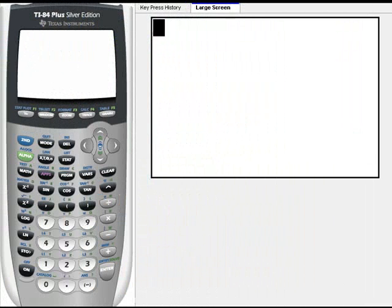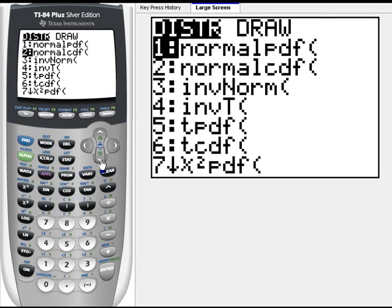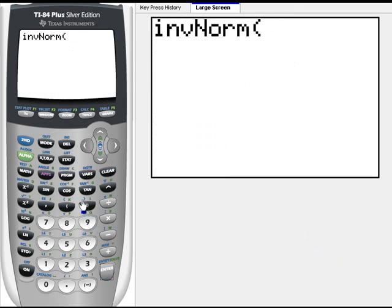So we need to find the Z value that corresponds with an area to its left of 0.05, and the command on the TI-84 that allows us to calculate that would be found under second vars inverse norm. And the commands are the area to the left, so 0.05, a comma, the mean, and the mean of the standard normal curve is 0,